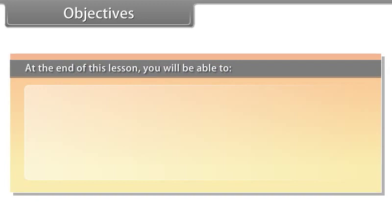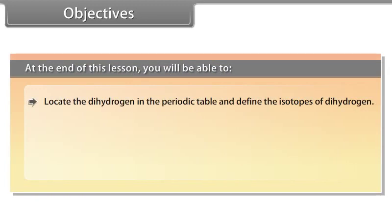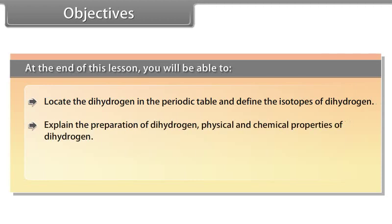Objectives. At the end of this lesson, you will be able to locate the hydrogen in the periodic table and define the isotopes of hydrogen. Explain the preparation of dihydrogen, physical and chemical properties of dihydrogen. Explain hydrides.